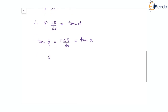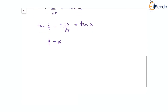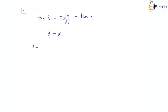With this we can say phi will be actually alpha — this is the angle between the tangent and the radius vector. Hence we can say that angle phi is actually alpha, which is a constant. So I hope this is clear. Thank you.